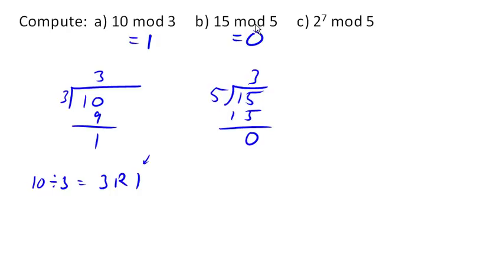2 to the 7th mod 5. This is actually not too bad to find because 2 to the 7th is 128. So if we want to find 128 mod 5, we divide 5 into 128. And let's see here. 5 goes in, 5 times 25, remainder of 3. So we get 25, remainder 3. So 128 mod 5 is 3.